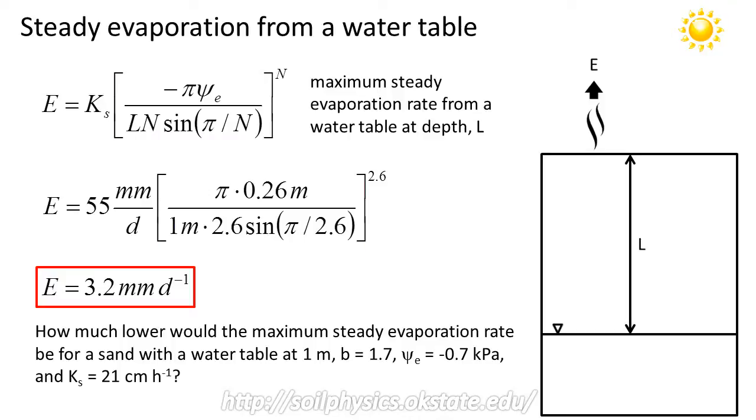I'd like you now to work another example by yourself. How much lower would the maximum steady evaporation rate be for a sand if the water table was at 1 meter depth? Given that the b value for a sand is approximately 1.7, the air entry potential is minus 0.7 kilopascals, and the saturated hydraulic conductivity is 21 centimeters per hour. Do you think that the evaporation rate will be higher for the sand since the saturated hydraulic conductivity is several orders of magnitude higher than it was for the clay loam?